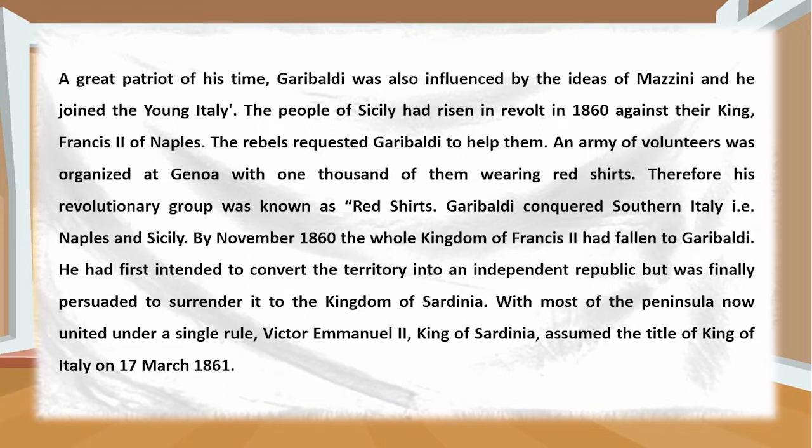Garibaldi conquered southern Italy — that is, Naples and Sicily — and by November 1860 the whole kingdom of Francis II had fallen to him. He had first intended to reconvert the territory into an independent republic, but was finally persuaded to surrender it to the Kingdom of Sardinia. With most of the peninsula now united under a single rule, Victor Emmanuel II, king of Sardinia, assumed the title of King of Italy on 17th March 1861.